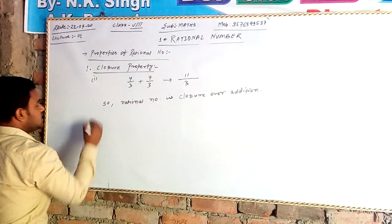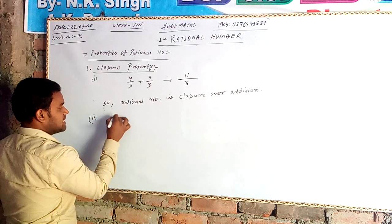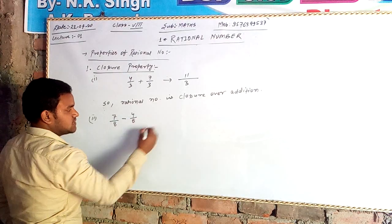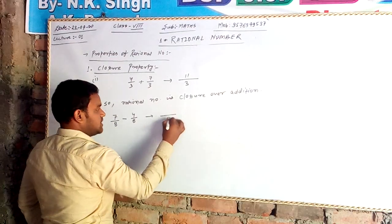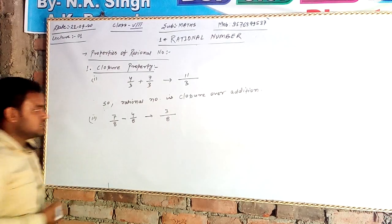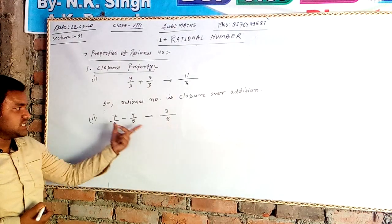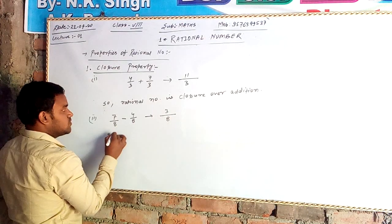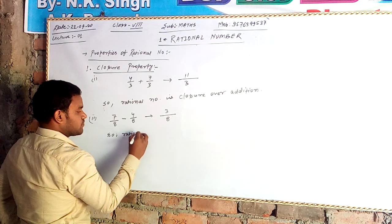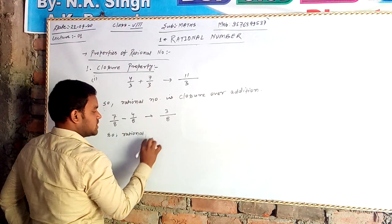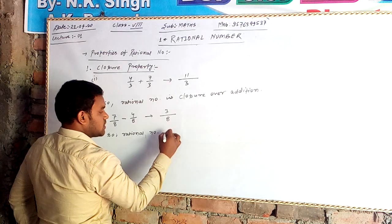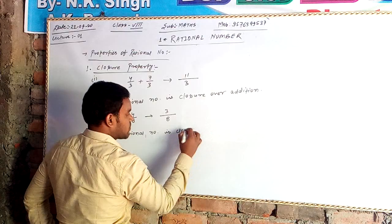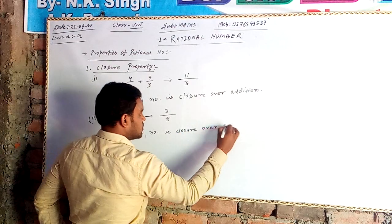Similarly, on subtraction: 7 by 8 minus 4 by 8 gives 3 by 8, which is also a rational number. The difference of two rational numbers is also a rational number. So rational numbers show closure property over subtraction as well.